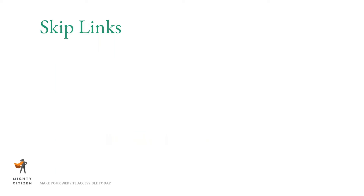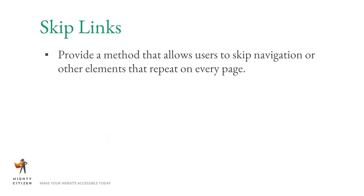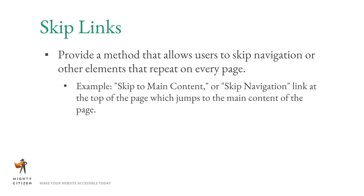Skip links: you need to provide a method that allows users to skip navigation or other elements that repeat on every single page — for example, a "skip to main content" link at the top of every page that jumps the user to the main content. Normally this link is hidden until you use a keyboard to access it. This is something a developer would need to add to your site. You can also provide structure to your site by defining areas like main content and navigation.